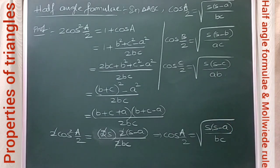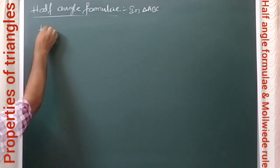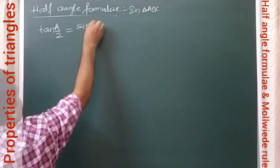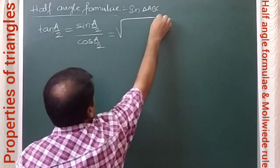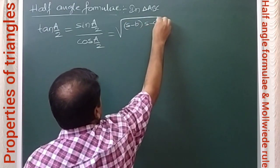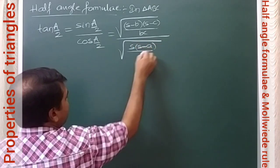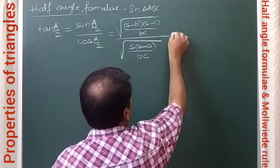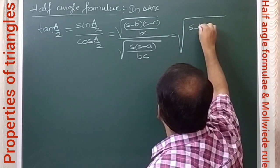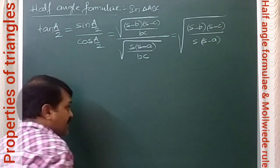Using these, we can get the formulas for tan(A/2), tan(B/2), tan(C/2). Taking tan(A/2) = sin(A/2) / cos(A/2): sin(A/2) = √[(s − b)(s − c) / bc] and cos(A/2) = √[s(s − a) / bc]. The bc in the denominator cancels, giving tan(A/2) = √[(s − b)(s − c) / s(s − a)].